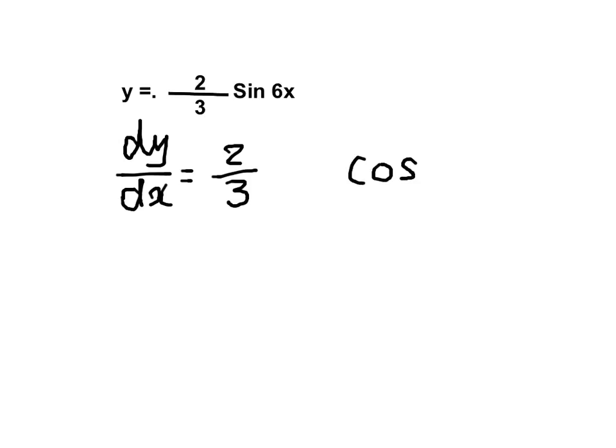sin 6x is cos 6x. And we need to multiply by the derivative of 6x, times by 6.